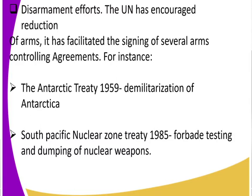The reduction of arms has been facilitated by the signing of a number of treaties that have controlled the production of more arms. The first was the Antarctic Treaty of 1959, which led to the demilitarization of Antarctica. We also had the South Pacific Nuclear Zone Treaty of 1985, which forbade the testing and dumping of nuclear weapons.